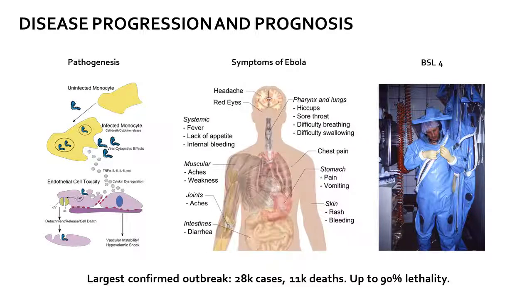Physical symptoms of the disease begin within days of infection and include fever, sore throat, and muscle pain. As the disease progresses, the patient begins to experience vomiting, diarrhea, difficulty breathing and swallowing, bleeding, and skin rashes.